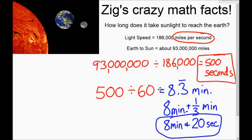So if the sun just winked out — and don't worry, scientists tell us it's not going to happen for another 4 billion years — you'd find out in about 8 minutes and 20 seconds. That's today's Zig's Crazy Math Facts. Make sure to check for the questions you need to answer on my website — should be right below this video. Thanks a lot, we'll see you guys tomorrow.